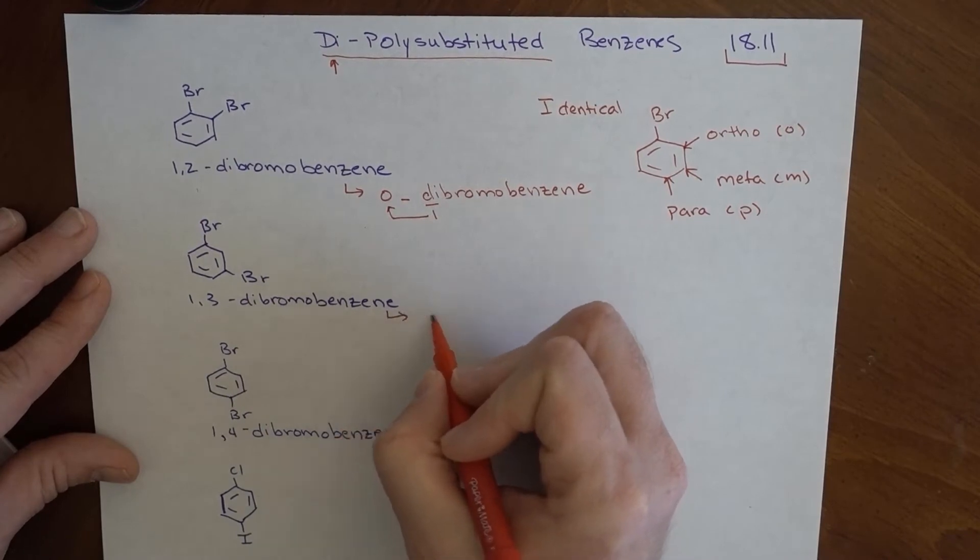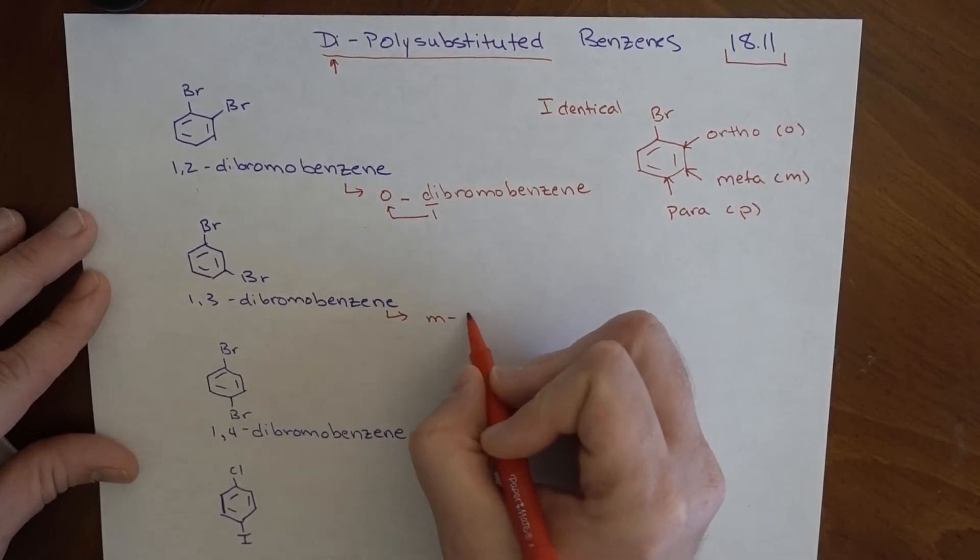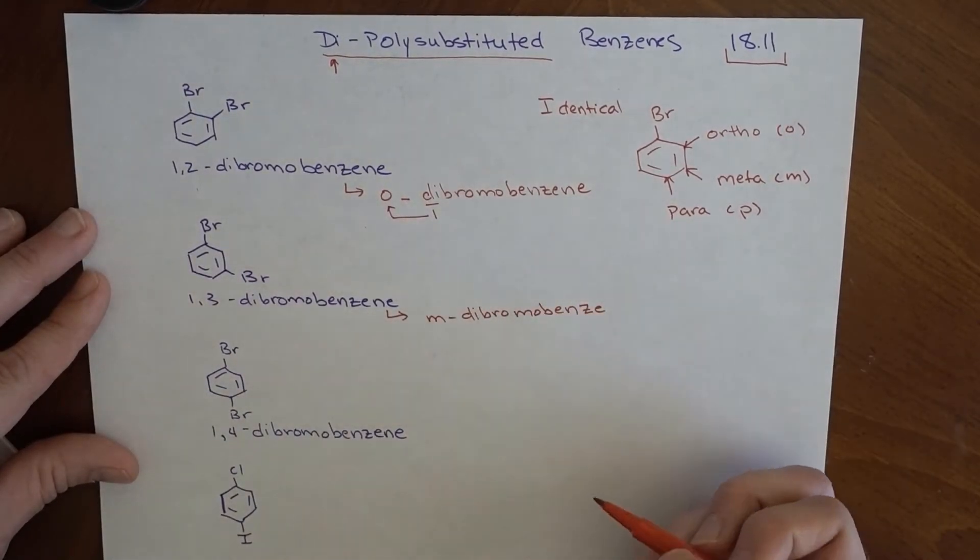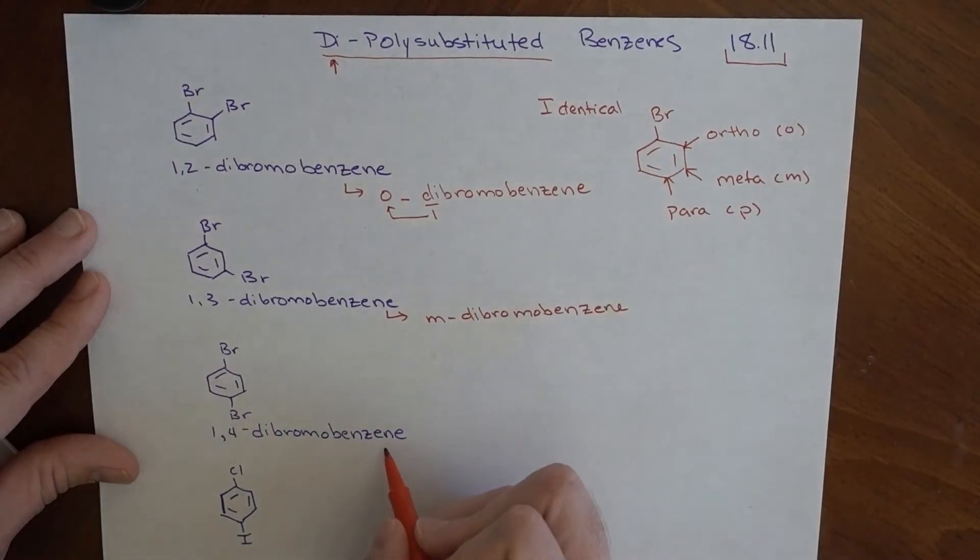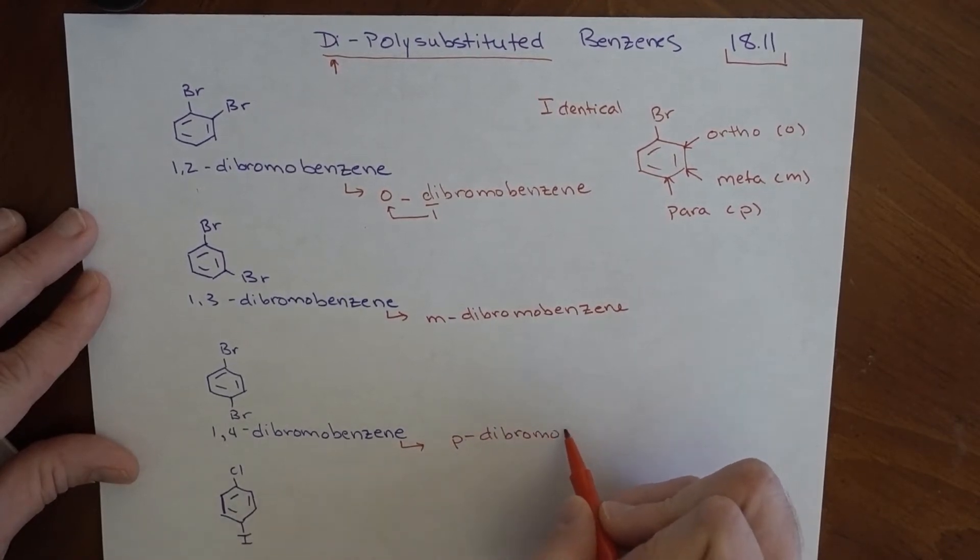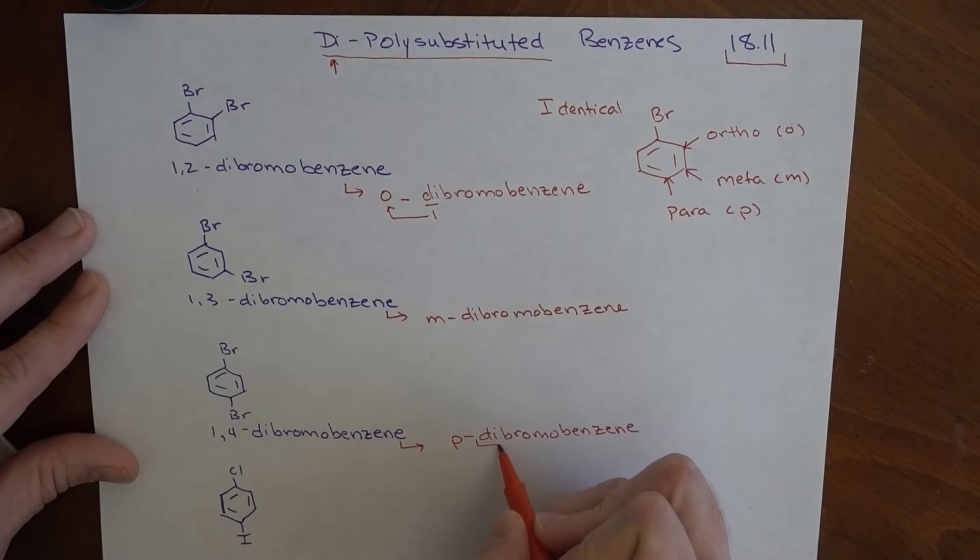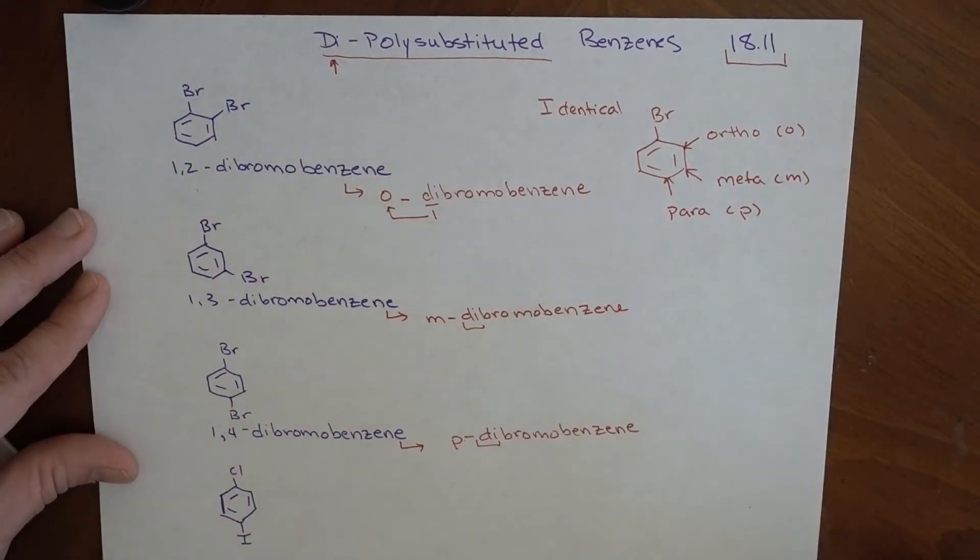This would be meta-dibromobenzene, and then this would be para-dibromobenzene. The di- is important, because if we just say para-bromobenzene, we're saying there's a bromine on there, but there's something else that is para to it. What is that? So, the di- still needs to be there. It's an important portion of this.